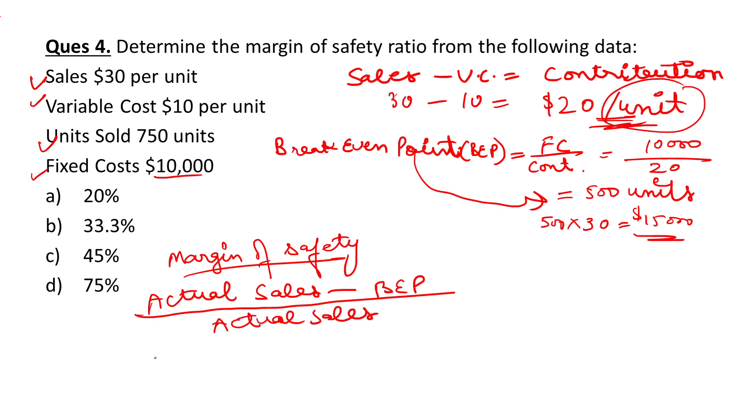Actual sales is 750 × 30 = $22,500 minus break-even point of $15,000 = $7,500 divided by $22,500, which comes out to be one-third or 33.33%.